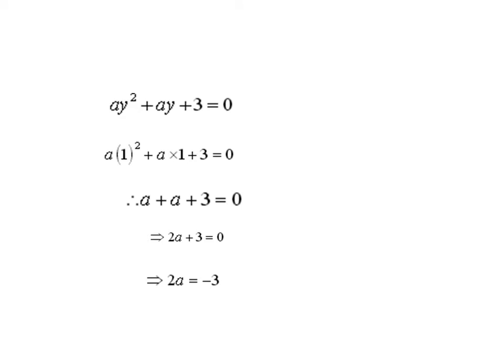By transposing +3 to the right-hand side we get 2a = -3, then transposing 2 to the right-hand side gives us a = -3/2.